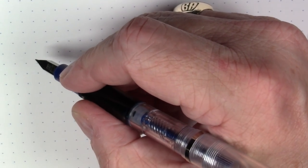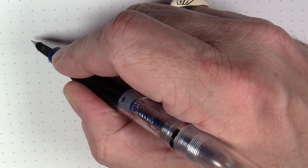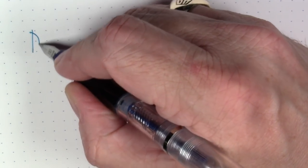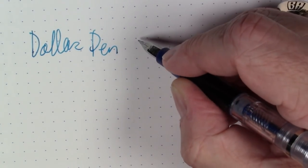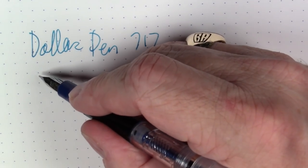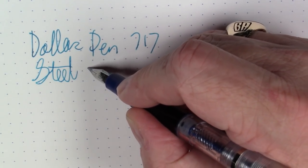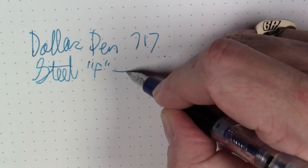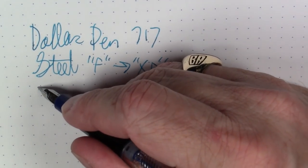Okay folks, so first we're going to take a look at the clear demonstrator version with the finer point, sort of conventional nib. So this is a Dollar Pen Model 717, and this is surely a steel nib that is, I would classify, as somewhere in the fine bordering on extra fine range.